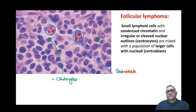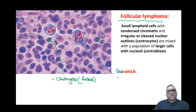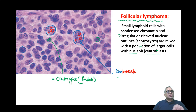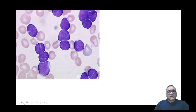On high power view: centrocytes are small lymphoid cells with condensed chromatin and irregular or cleaved nuclear outline — these are also called buttock cells. Centroblasts are larger cells with prominent nuclei. Small cells with nuclear cleavage are centrocytes; larger cells with prominent nuclei are centroblasts. This is the finding of follicular lymphoma on lymph node biopsy.